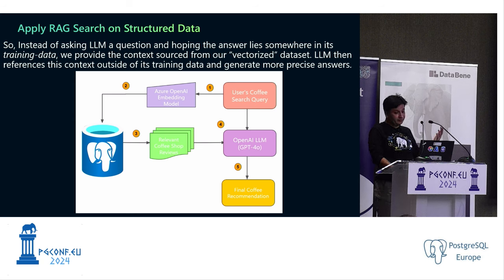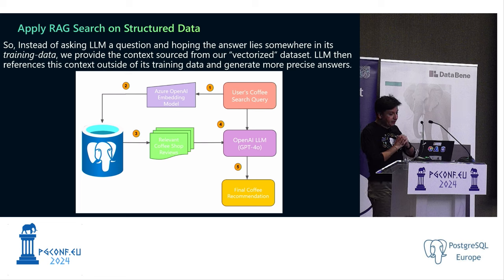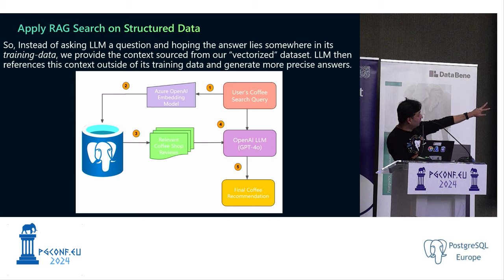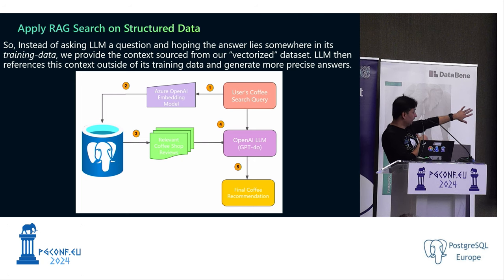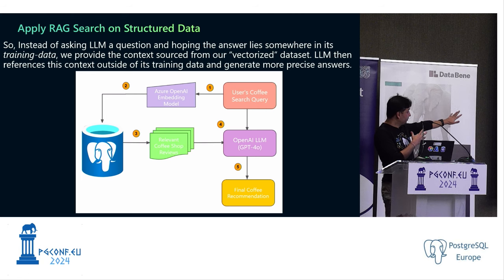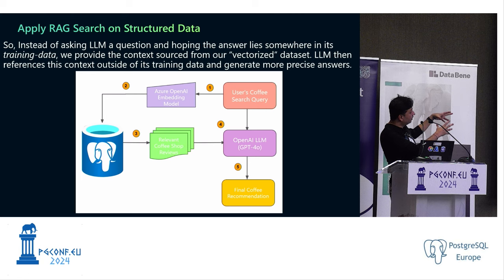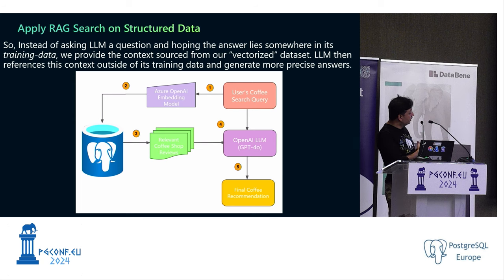RAG retrieves relevant information from our vectorized dataset and passes it to a large language model. The LLM then references this context data — outside its training data — and gives highly relevant results. The flow: user passes a search query, I pass it to Azure OpenAI embedding model, store data in Postgres, run the query, get relevant coffee reviews — those 20 results — and now I pass that data to the LLM as grounding data.